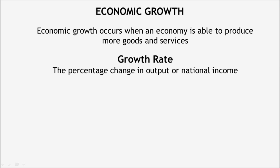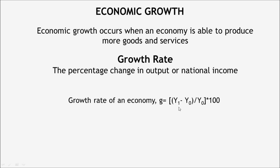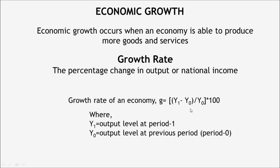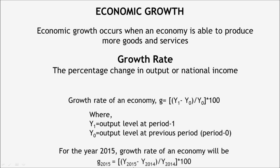Now let us look at the formula to measure economic growth of an economy. Here G is to denote growth rate. Taking the difference of output level of two successive years of an economy and then dividing it by the output level of the last year, we can have the growth rate. We multiply it by 100 to express it in percent. Here Y1 is the output level of period 1 and Y0 is the output level of the previous period. For example, for the year 2015, the growth rate will be G(2015) equals output level of 2015 minus output level of 2014, divided by output level of 2014, then multiplied by 100. Always keep in mind that growth rate is a number — it is unit free.